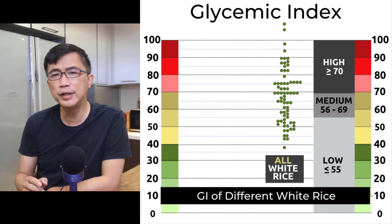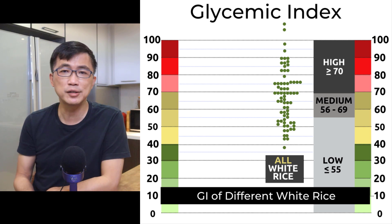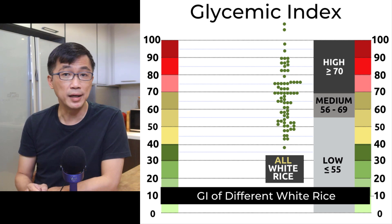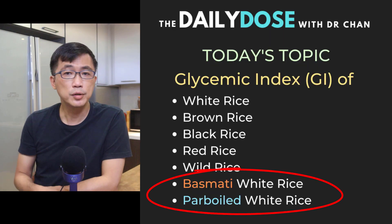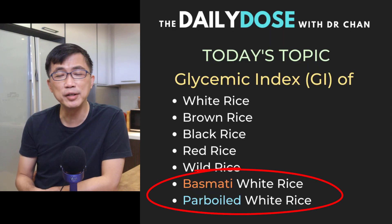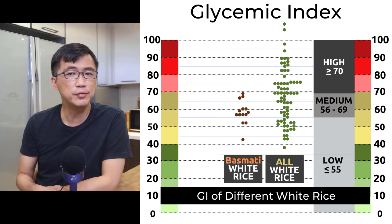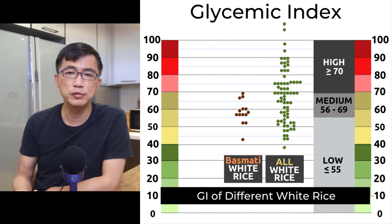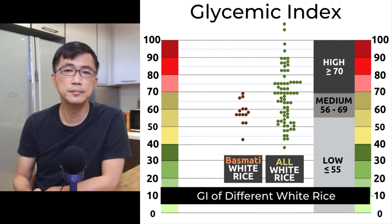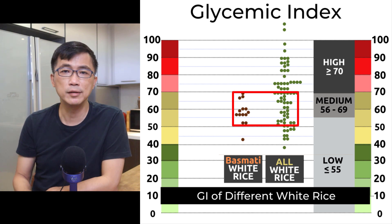Next, let's compare the GI of different types of white rice. There are so many different ways to categorize white rice based on type or processing method, but I shall only focus on two — because these are the two that many people, especially my patients with diabetes, often ask me about. Let's start with white basmati rice. These are the GI values of all the different lab tests done on white basmati rice. You can see the range of GI values of white basmati rice in general falls in the lower half of the range of GI values of all white rice.